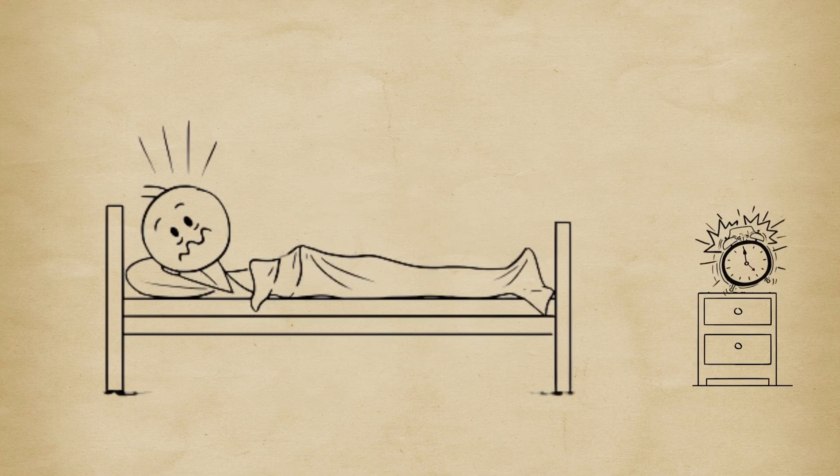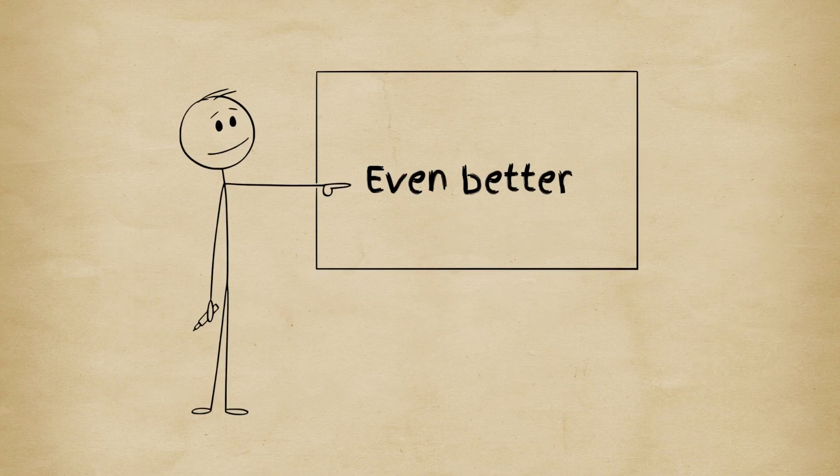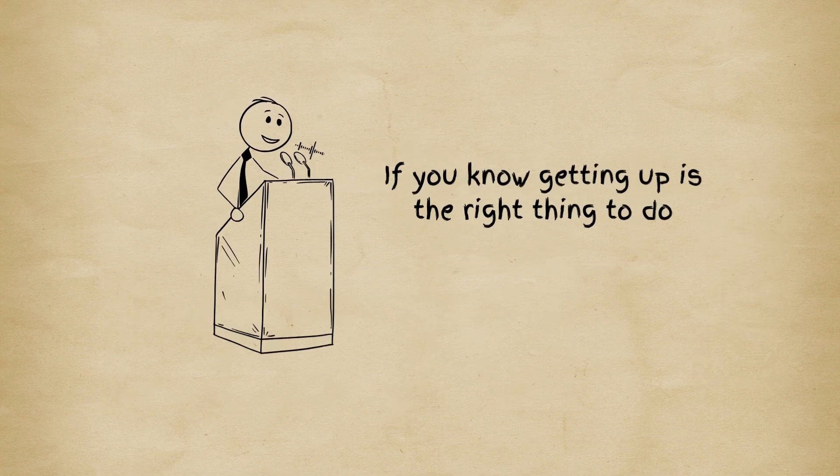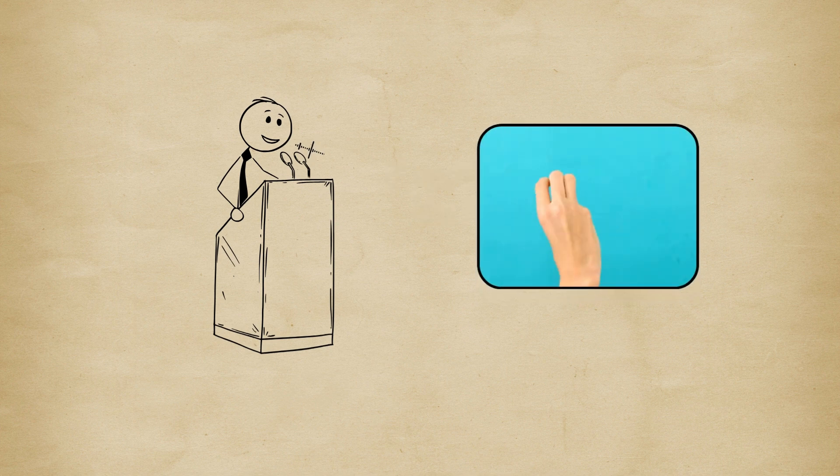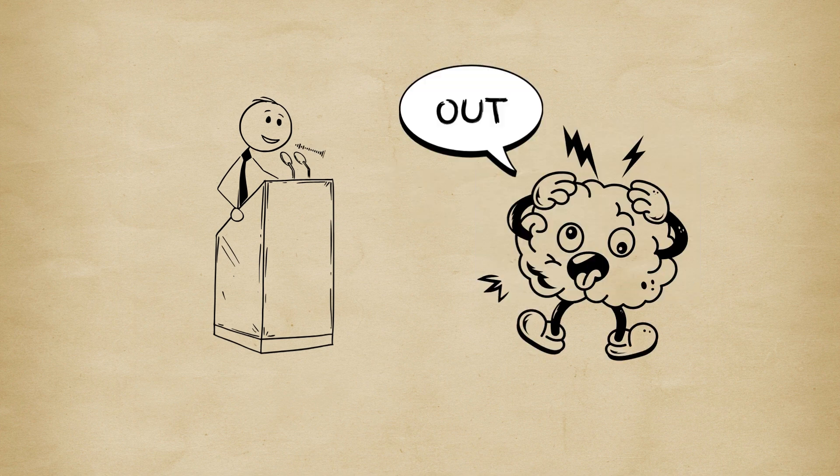Try this. Place your alarm across the room so you have to stand up to turn it off. Even better, pair it with the 10-second rule. If you know getting up is the right thing to do, count to 10, and do it before your brain talks you out of it.